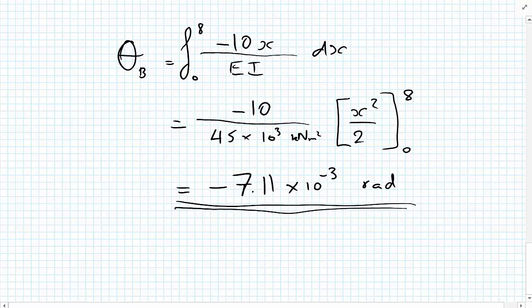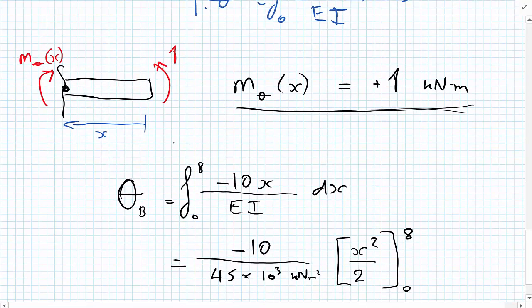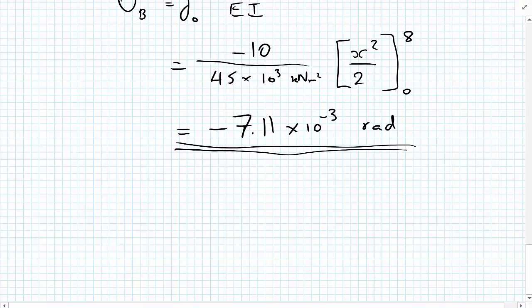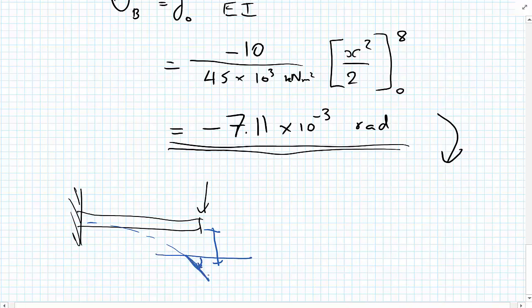We've got a minus value for this rotation. We applied our unit moment going in an anti-clockwise direction, so a minus value means our cantilever is actually rotating clockwise. That makes perfect sense — with a cantilever under a point load we expect the deflection to go down, and the tip rotates clockwise, which we take as negative.